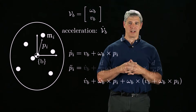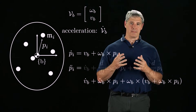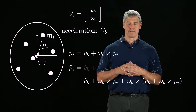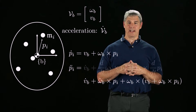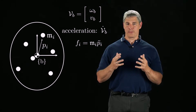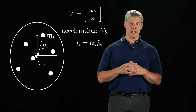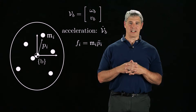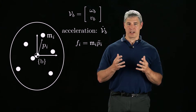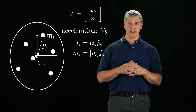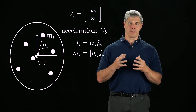Notice that it has velocity product terms in the form of omega-b cross vb and omega-b cross omega-b cross pi. Taking as a given that f equals ma, we get the force fi needed to move the mass mi, using the expression for pi-double-dot we just derived. The corresponding moment in the b-frame is mi equals pi cross fi, written here with our bracket notation.